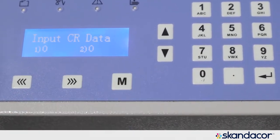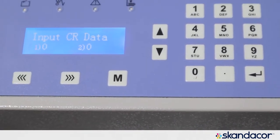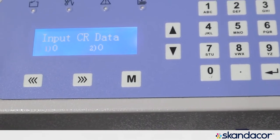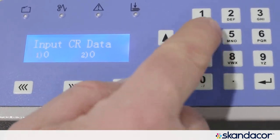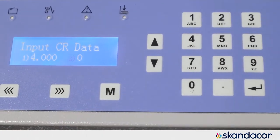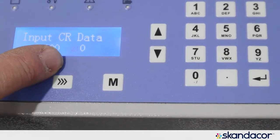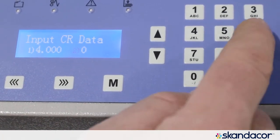Push it once and this takes you to input crease data and you can input your creases for the job that you're programming. So I want to do my first crease at four inches. I would push four and then the enter arrow and that now automatically goes to the second crease position. I want to do that at 6.5.